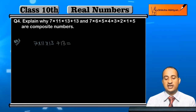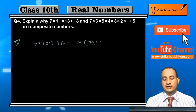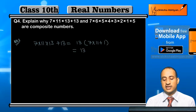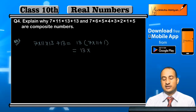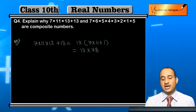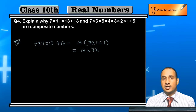If I take 13 as common from both terms, then what will I get? 13 into (7 into 11 plus 1), which is 13 into (77 plus 1) = 13 into 78. So if you look at this number, it is divisible by 13. Why? Because 13 is common.